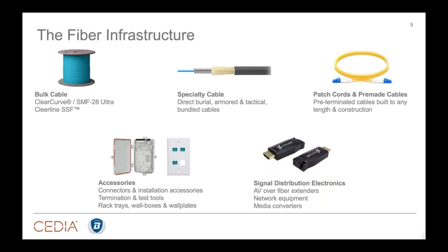As integrators start their fiber journey, they often think about pre-terminated cables — measuring the distance, buying a pre-terminated cable, simply pulling it and plugging it in. We offer online courses that walk you through how to do this, how to design a cable, what to look for and look out for. Pre-terms and pre-made cables are a very good way to start your journey. Of course, you also have enclosures — wall boxes, rack trays, wall plates — for mounting and securing cable.